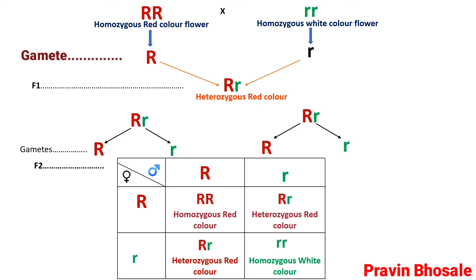This is the result. Out of four combinations, three plants will produce red color flower and one plant will produce white color flower, since it is in homozygous condition. The phenotypic ratio is 3 is to 1. And the genotypic ratio will be 1 is to 2 is to 1: one plant homozygous red color, two plants heterozygous red color, and one plant homozygous white color.